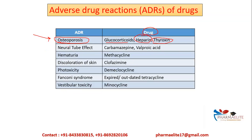For neural tube defects, it is caused by carbamazepine and valproic acid. Hematuria is associated with metacycline. Discoloration of skin is with clofazimine. Phototoxicity is specifically with fluoroquinolones like sparfloxacin, and also with demeclocycline. Fanconi syndrome has been a favorite exam question — it is associated with expired or outdated tetracycline.